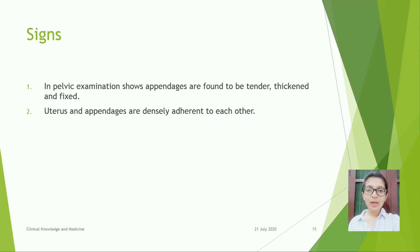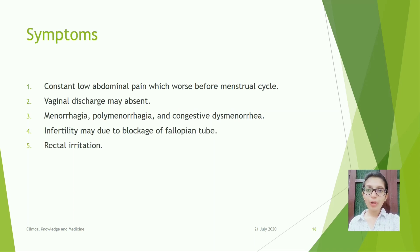Signs of chronic PID: on pelvic examination, the adnexa are found to be tender, thickened, and fixed. The uterus and adnexa are densely adherent to each other. Symptoms: constant low abdominal pain which is worse before the menstrual cycle, vaginal discharge may be absent, menorrhagia, polymenorrhea and congestive dysmenorrhea, infertility possibly due to blockage of the fallopian tube, and rectal irritation.